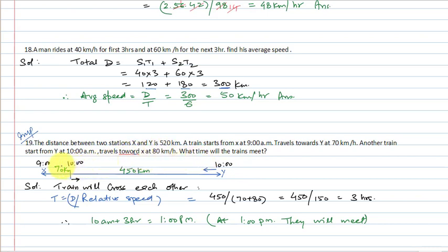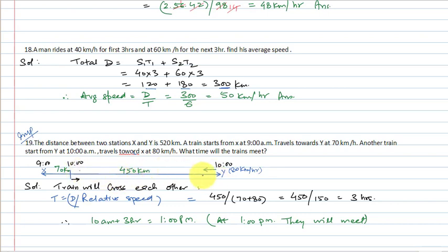The train from X starts at 9 AM at 70 km per hour; train from Y starts at 10 AM at 80 km per hour. By 10 AM, the first train has already traveled 70 km. So the remaining distance between the two trains at 10 AM is 520 − 70 = 450 km.